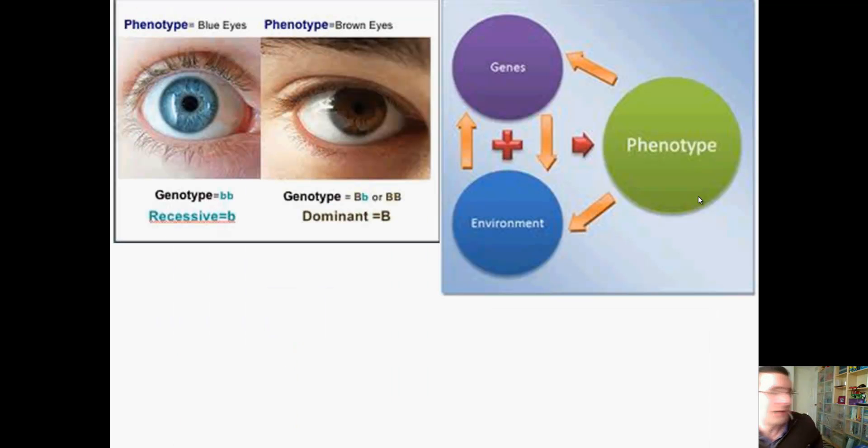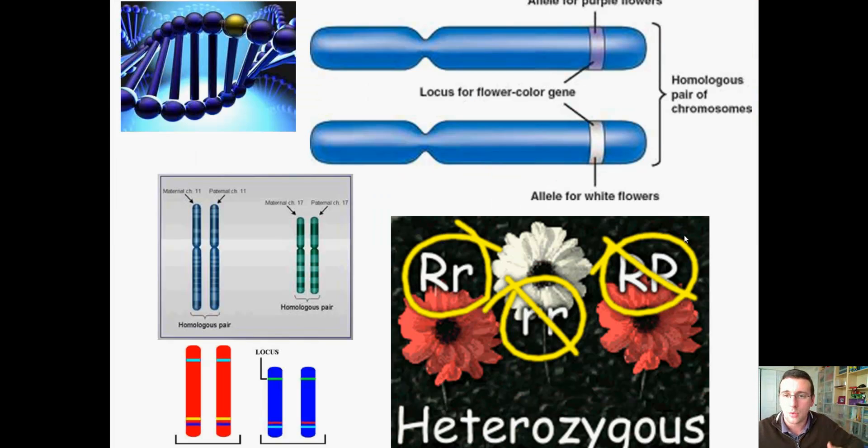The phenotype is what you actually look like. That is what you see. When you touch, when you see someone, you're seeing the proteins that make up the person. And those proteins is the product that comes out of the DNA. That is your look. For example, blue eyes or brown eyes is what you actually visualize. But there is a code that actually determines that.